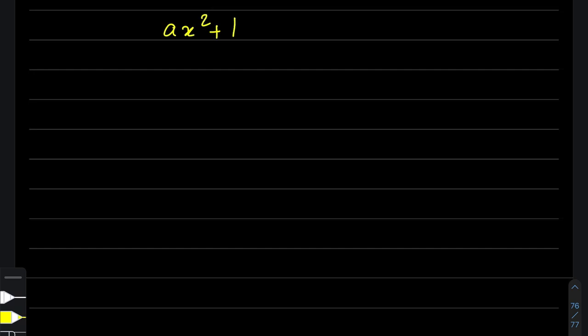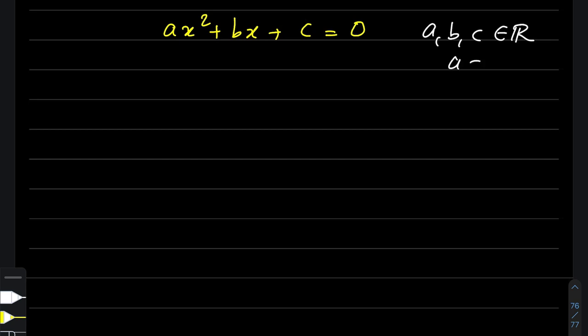Let's say we have a quadratic equation ax² + bx + c = 0, where the coefficients a, b, and c are all real numbers, and of course a cannot be 0. The discriminant in this case is b² - 4ac, because this term helps us to discriminate between the nature of the roots.